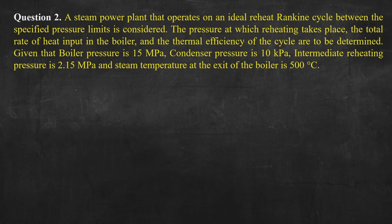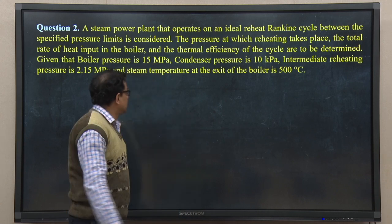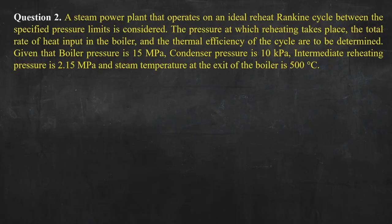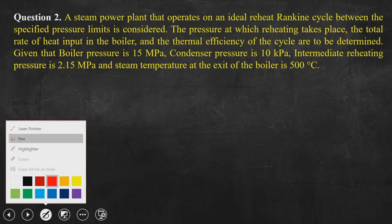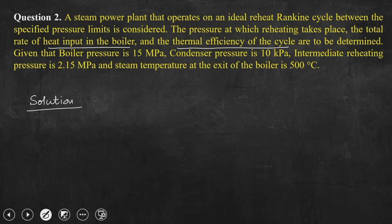Given this data set, we need to calculate the heat input in the boiler and the thermal efficiency of the cycle — these two quantities. So, if we start solving this problem, it is given that this is an ideal reheat Rankine cycle.